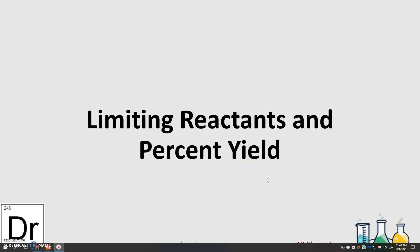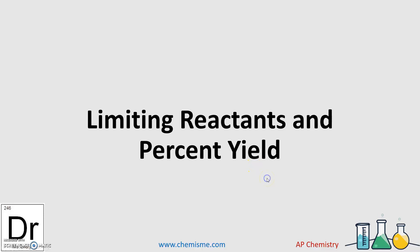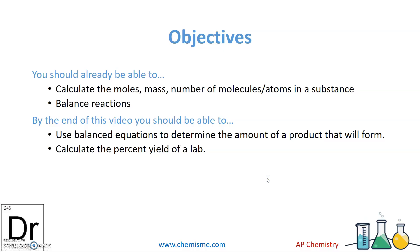In this video, we're talking about limiting reactants and percent yield. You should already be able to calculate moles, mass, number of molecules, and atoms in a substance, and be able to balance reactions. By the end of this video, you should also be able to use balanced equations to determine the amount of product that will form and calculate the percent yield of the lab.